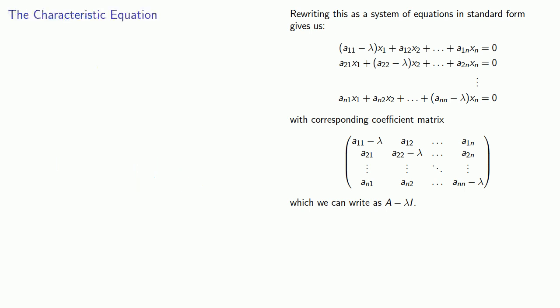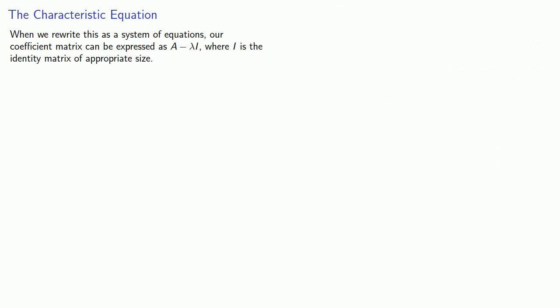That means when we reframe the eigenvector eigenvalue problem as a system of equations, our coefficient matrix can be expressed as A minus lambda times I, where I is the identity matrix of the appropriate size.